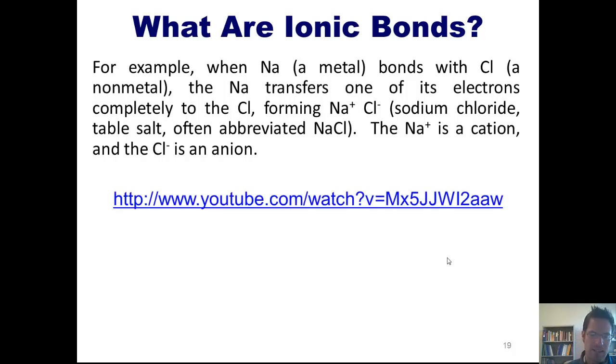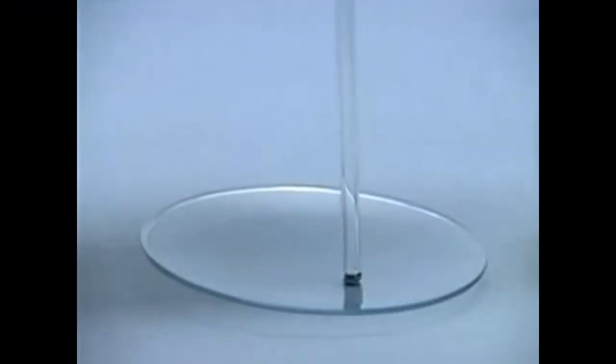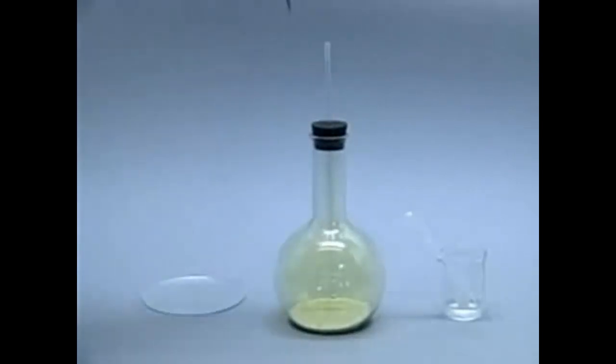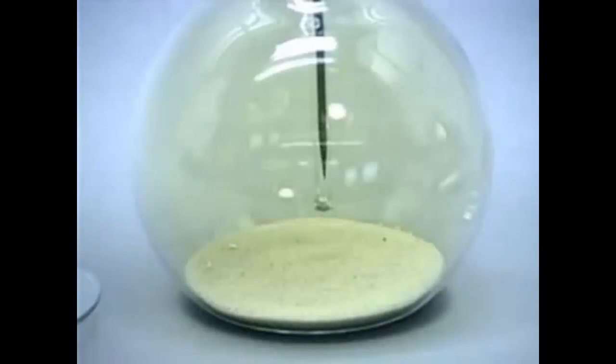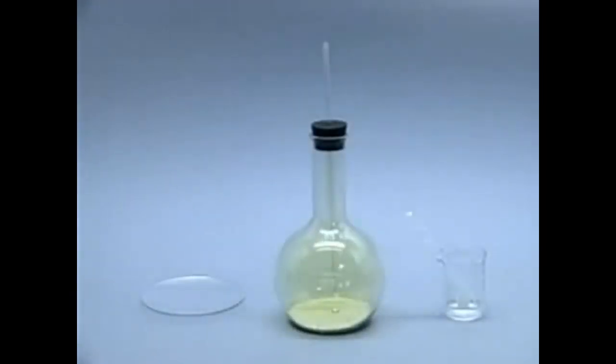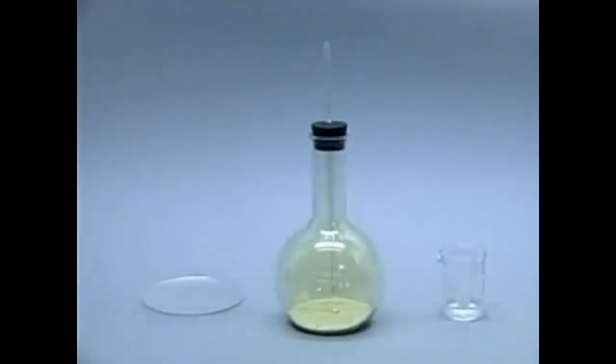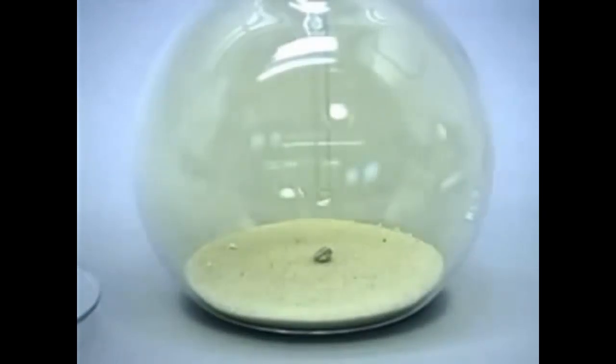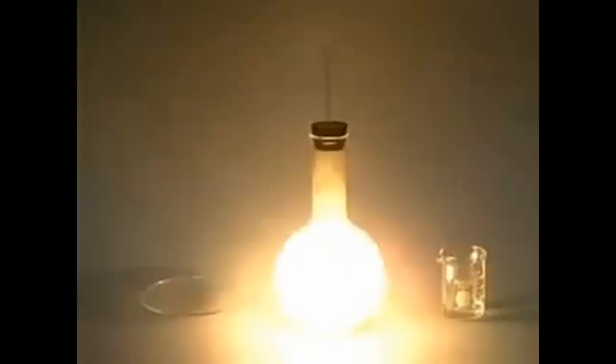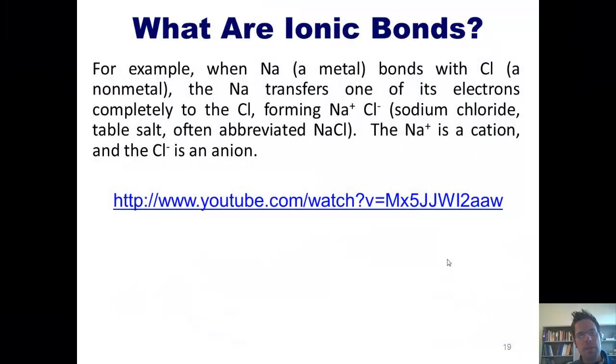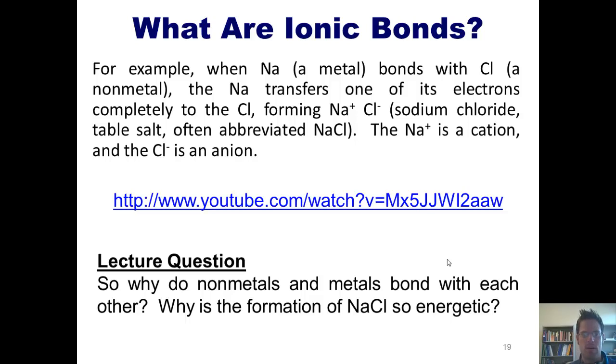Now here's a link to a great YouTube video showing this chemical reaction. A small piece of sodium metal is placed in a flask containing yellow chlorine gas. The flask also contains sand to prevent the heat, which will be generated by the reaction from cracking the glass. Initially, no reaction is observed between the sodium and the chlorine. The reaction will be initiated by adding a drop of water to the sodium. This begs the question, why do nonmetals and metals bond with each other at all? And why is the formation of sodium chloride so energetic?